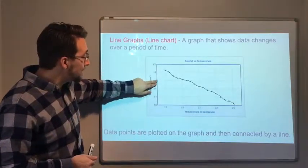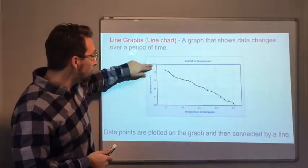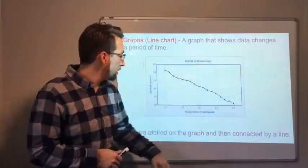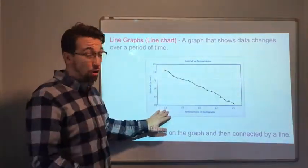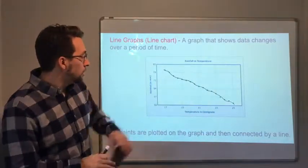okay? And as you have less rain, it gets, I'm sorry, as you have more rain, it's cooler, and as you have less rain, it gets warmer. Because 17 degrees is colder than 25 degrees in Celsius, right? So this is cool.